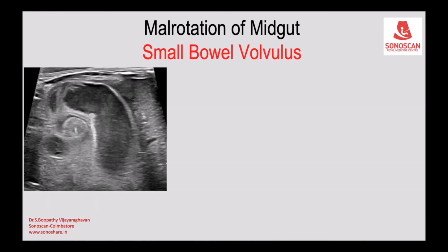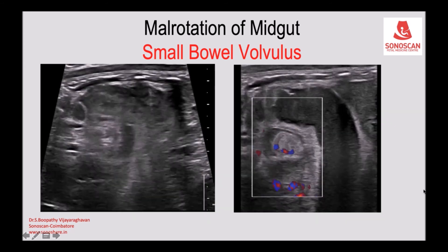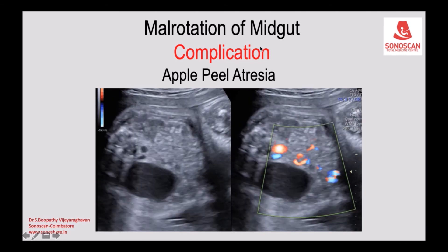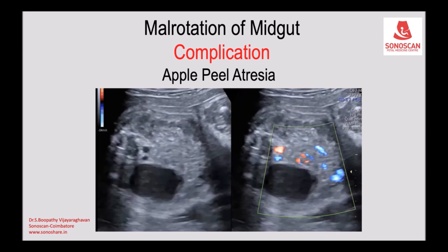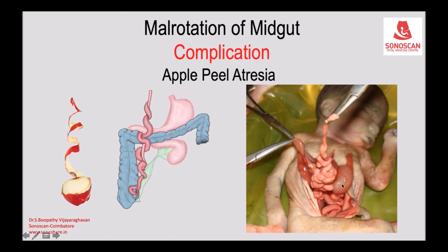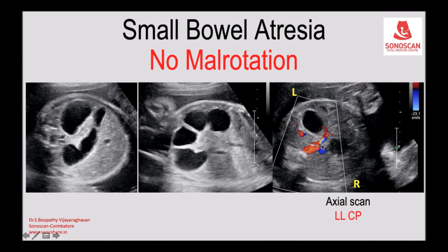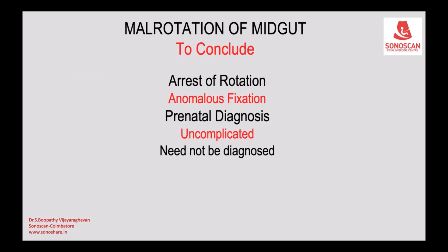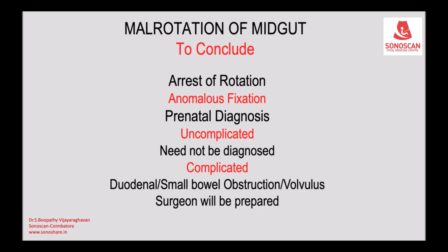Moving the transducer down, you can see the sonographic whirlpool sign both on grayscale and color Doppler. This whirlpool sign indicates volvulus, which in this case is chronic rather than acute. You will see atresia with a massively dilated jejunum, and distal to that the small bowel appears as an apple-peel sign. The superior mesenteric artery is red on the left side and the superior mesenteric vein is blue. When you see one of the three complications — duodenal obstruction, volvulus, or atresia — you should look for malrotation. The diagnostic feature is the superior mesenteric vein on the left side of the superior mesenteric artery.